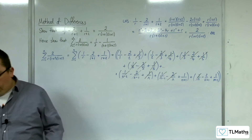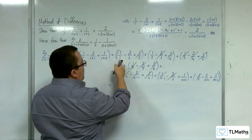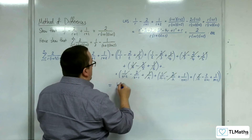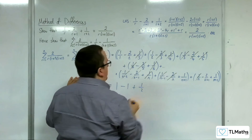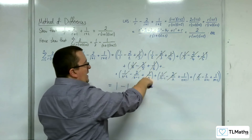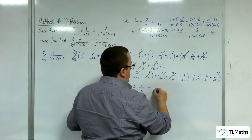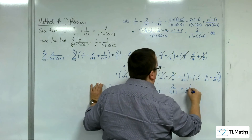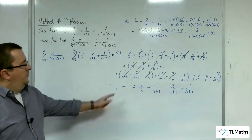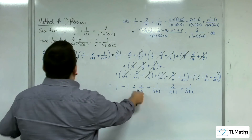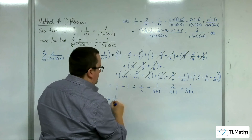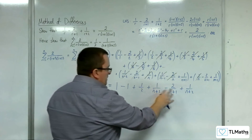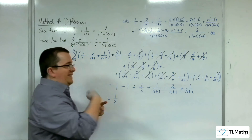So, what are we left with? We've got 1 over 1. At this point I can start simplifying: 1, take away 1, plus a half. Then everything else gets cancelled, except for 1 over (n+1), take away 2 over (n+1), plus 1 over (n+2). So 1 take away 1 is gone. I've got the half. And I'm left with 1 over (n+1) take away 2 over (n+1), which is take away 1 over (n+1).